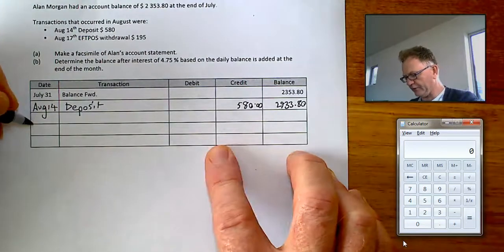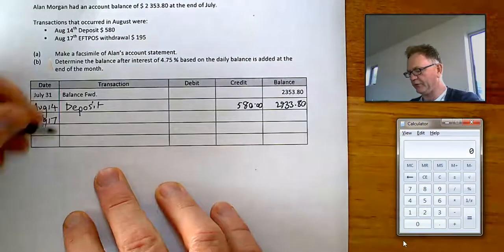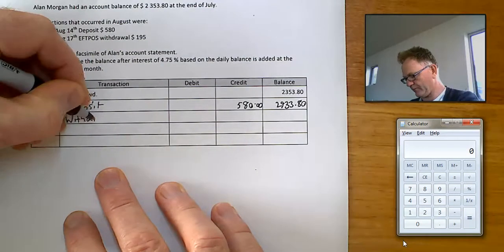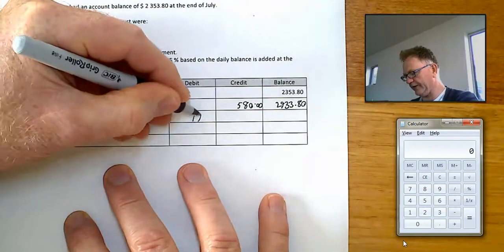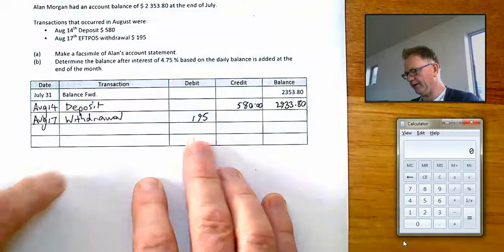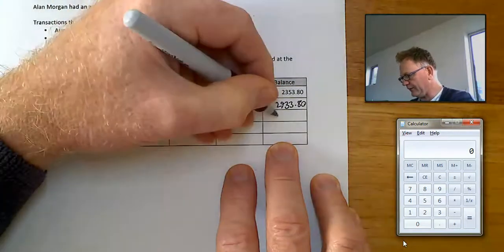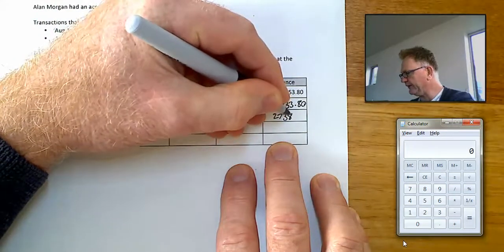Then on August the 17th. There was a withdrawal. Of $195. That goes in the debit column. Take away $195 away from what's in there. And you'll have $2,738.80.